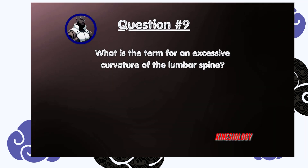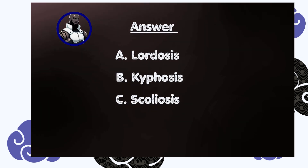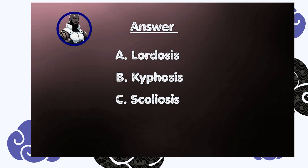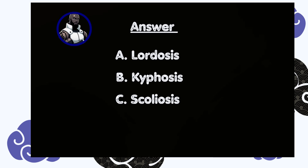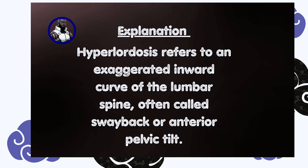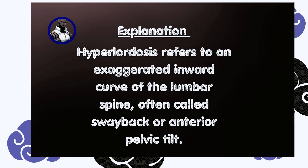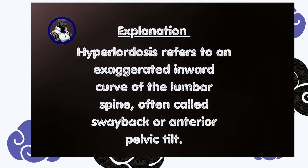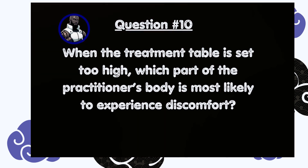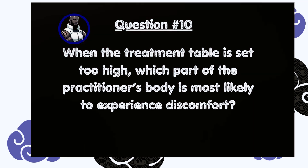Question number nine: what is the term for an excessive curvature of the lumbar spine? A) Lordosis, B) Kyphosis, C) Scoliosis. Answer is A, lordosis. Hyperlordosis refers to an exaggerated inward curve of the lumbar spine, often called swayback or anterior pelvic tilt.